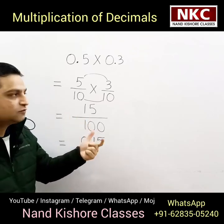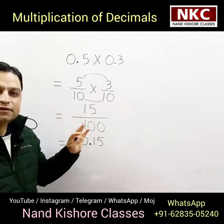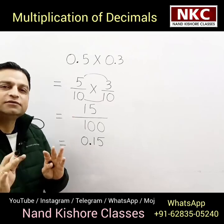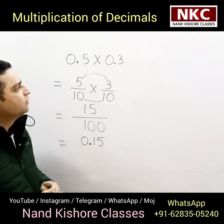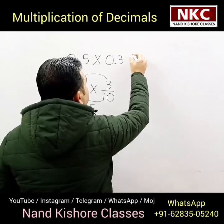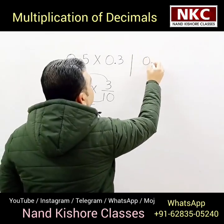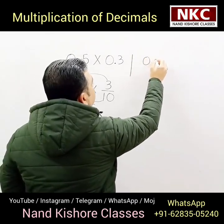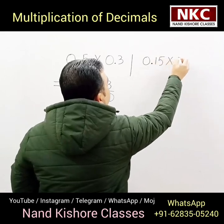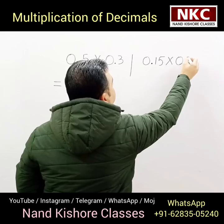I have done the reverse process. This is the basic concept behind the multiplication of decimals, and I find it really easy. Let me do another question. Let's suppose we have 0.15 multiplied with 0.3.